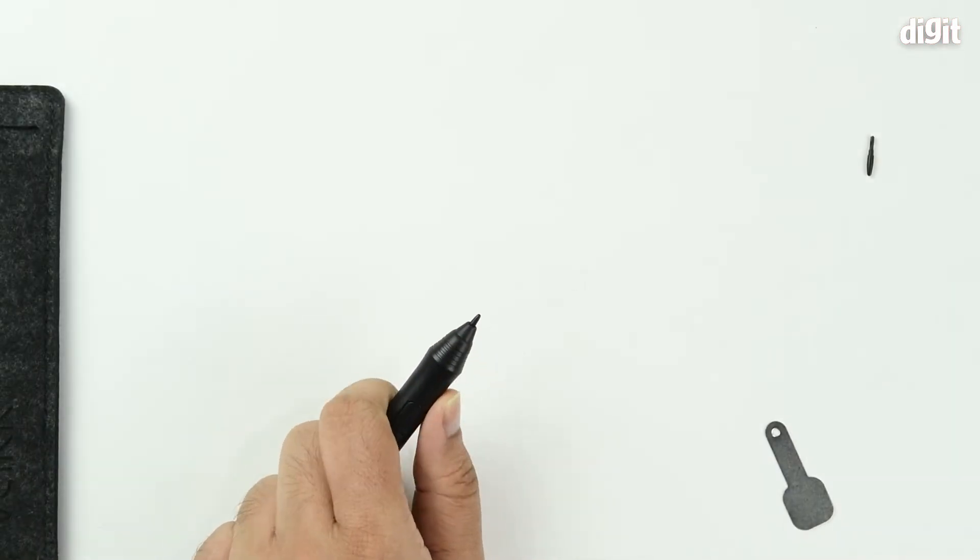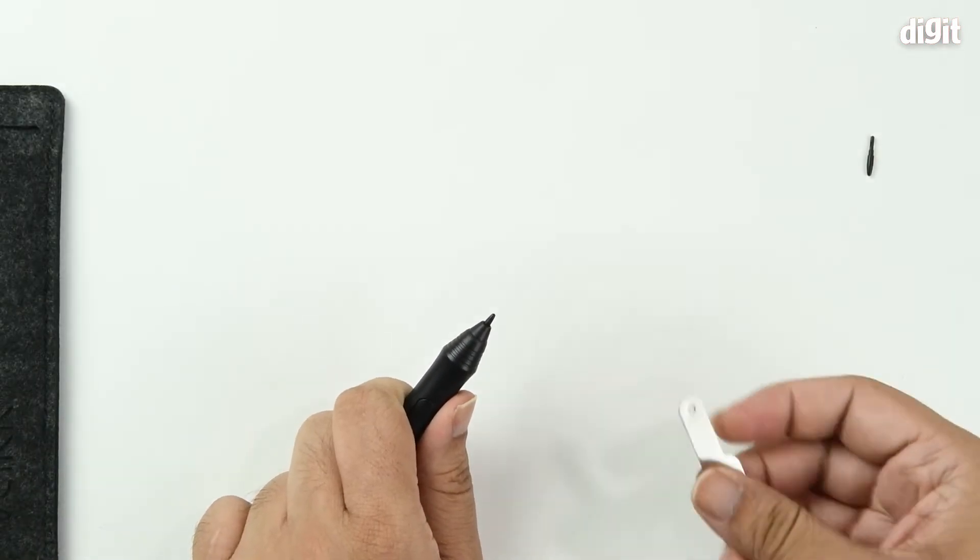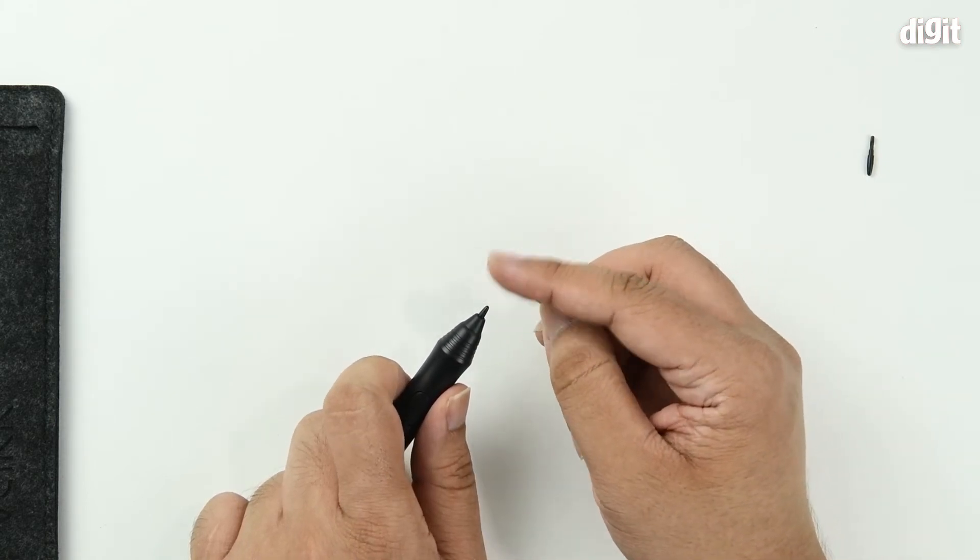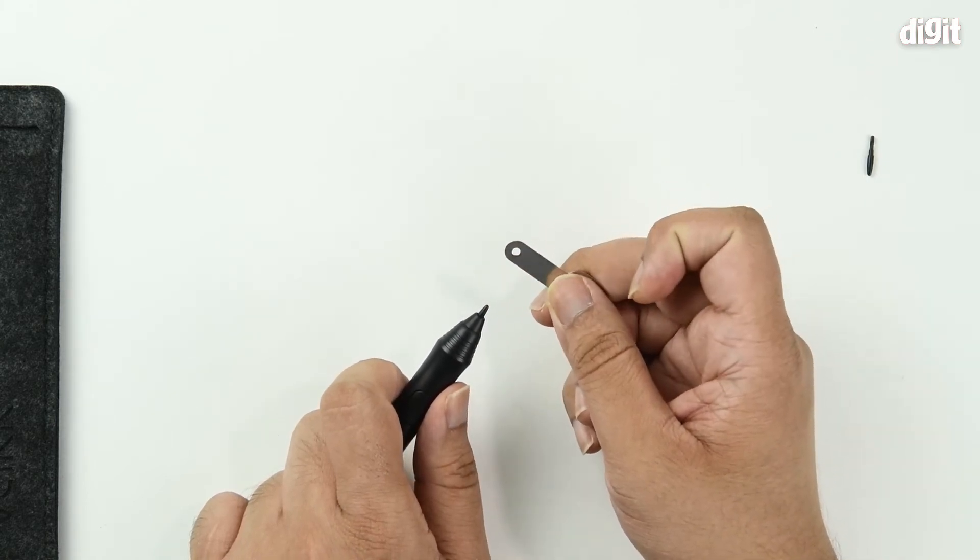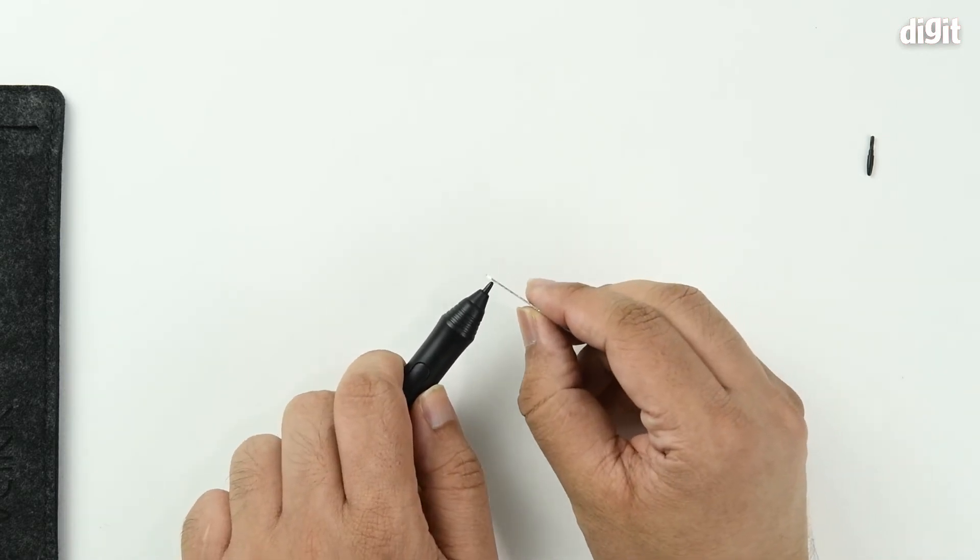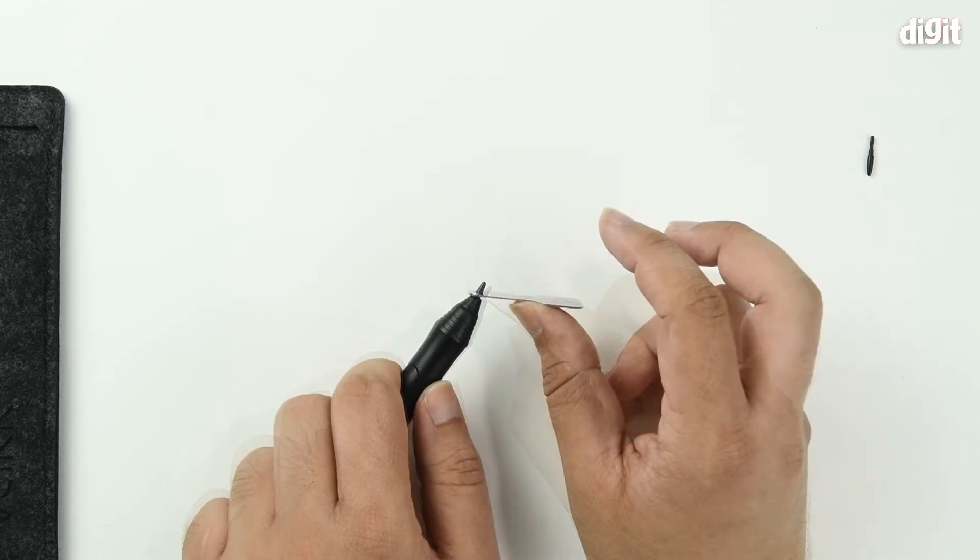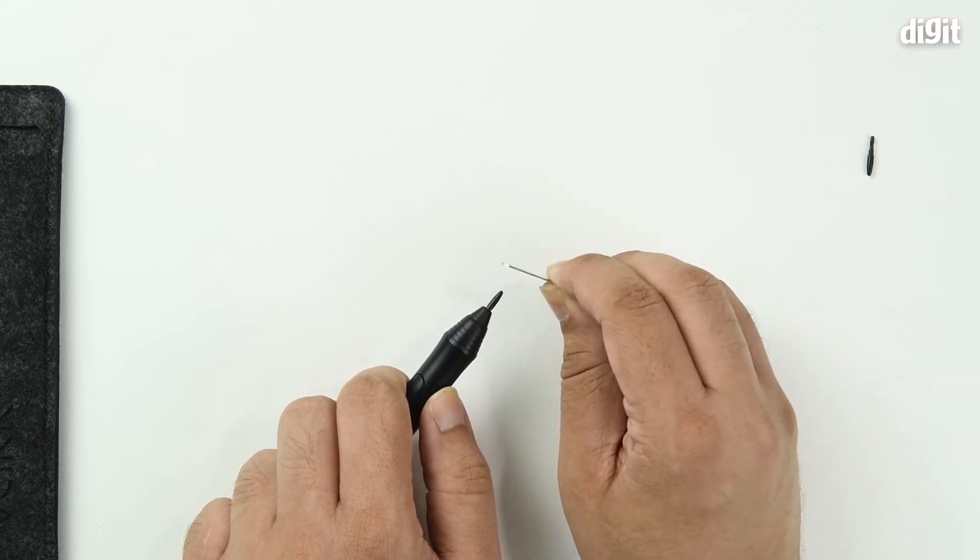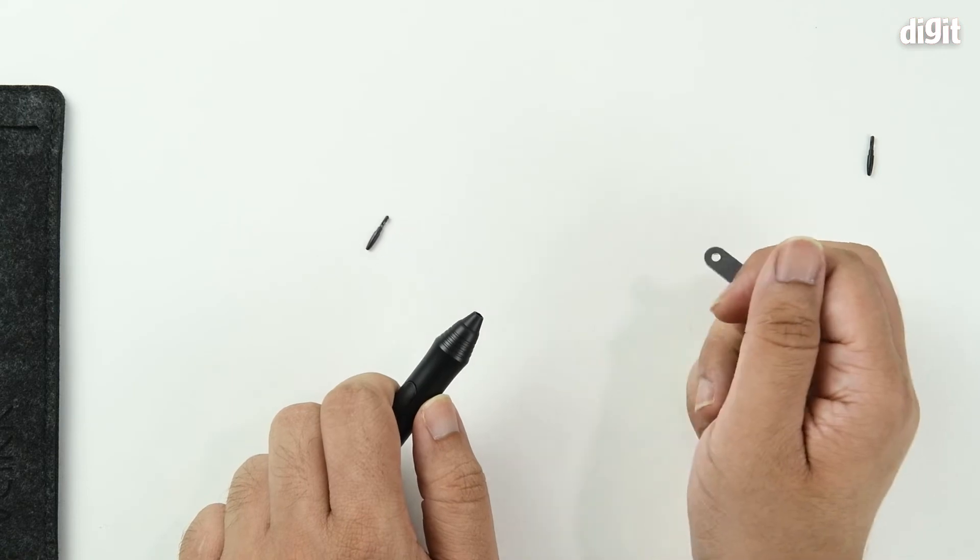Hold the pen firmly in your hand, lift the nib removal tool, bring it close. You need to insert the nib into the little hole at the end of the tool. Once you do that, start angling the tool a little. You don't have to apply much force, just pull out and the nib comes out.